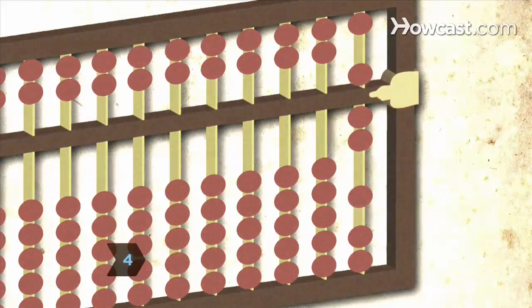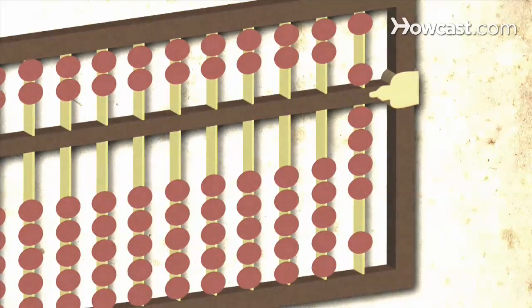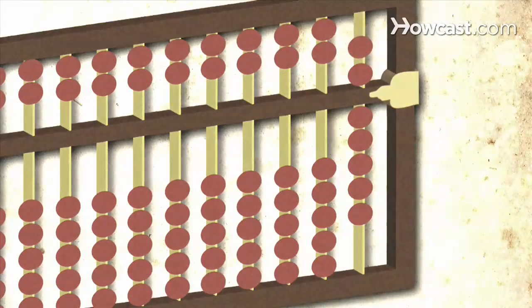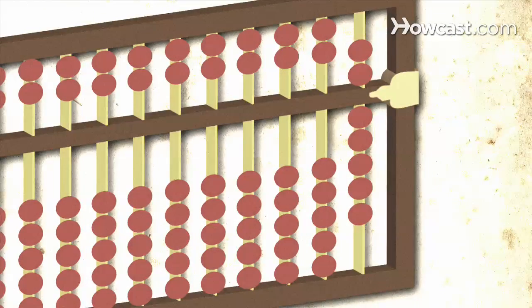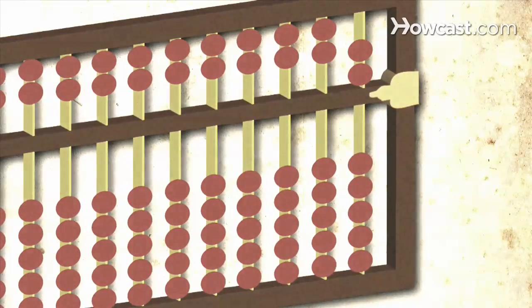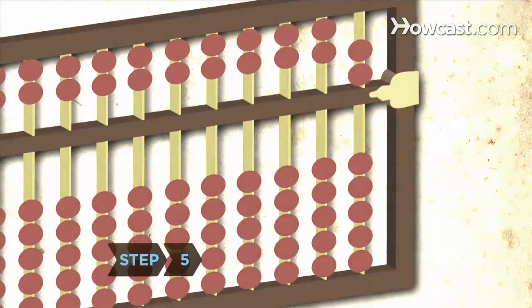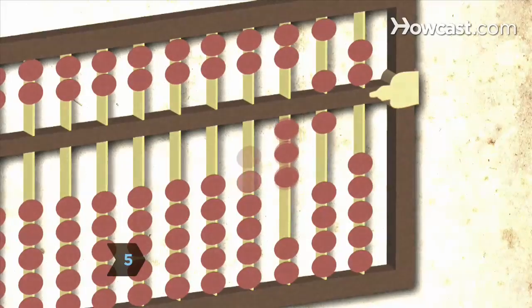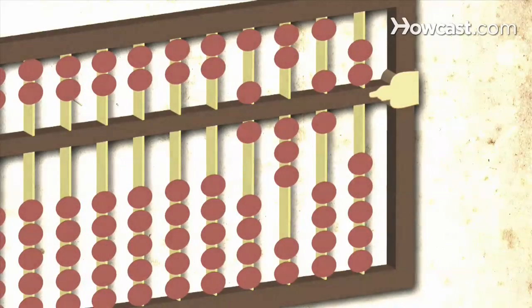Step 4. Set a second 5 bead in the same column when you have 5 more beads set in the lower section and need to add one more. The two beads in the upper section correspond to the number 10. Clear the 5 beads in the lower section.